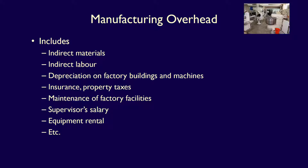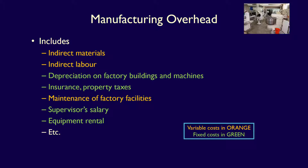Manufacturing overhead can be divided into costs which are variable and costs which are fixed. Indirect materials, indirect labour, maintenance for the factory facilities – these are all variable in nature because these costs change with the level of activity. If production increases, these costs would increase, and if production reduces, the costs would also reduce. Other overhead costs are fixed: depreciation on the factory building and machine, insurance and property taxes, supervisor salary, and equipment rental. Regardless of the level of activity, these are likely to be fixed, at least within the relevant range.